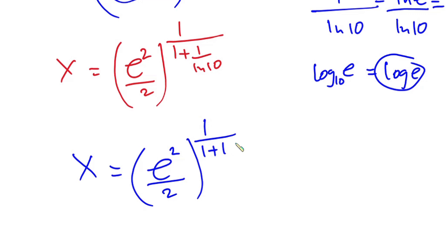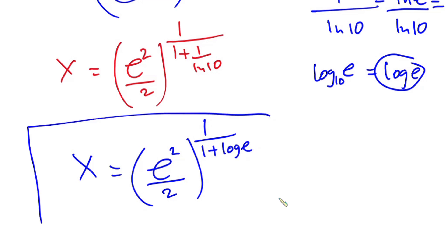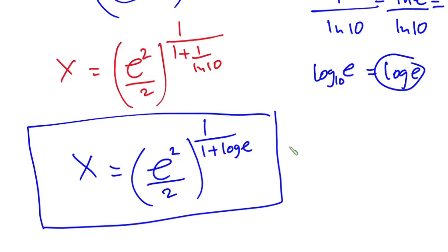Therefore, x is equal to (e squared over 2) to the power of 1 over (1 plus log e), and this is our final answer. I hope you found this video useful. Please give it a thumbs up and don't forget to subscribe to this channel. Thanks a lot for watching — see you in the next video!